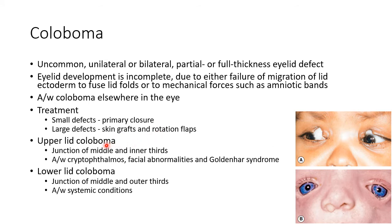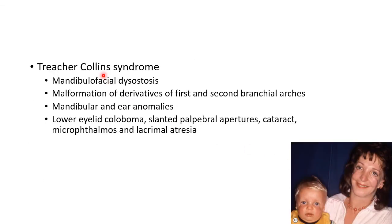Upper lid coloboma occurs at the junction of the middle and inner thirds, as you can see in this picture, and it is associated with cryptophthalmos, facial abnormalities, and Goldenhar syndrome. Lower lid coloboma occurs at the junction of the middle and outer thirds, and it is associated with systemic conditions like Treacher Collins syndrome.